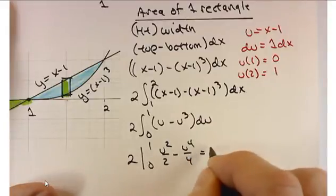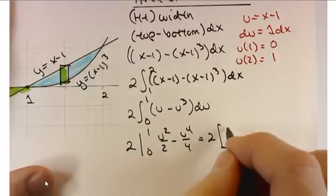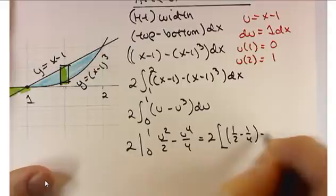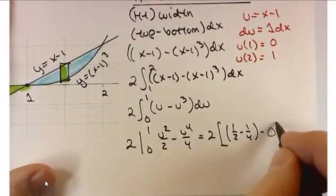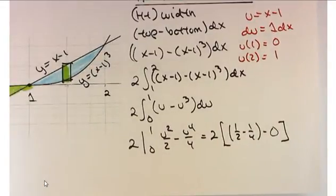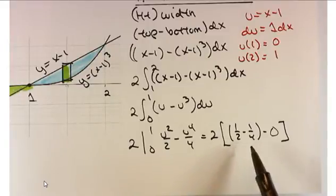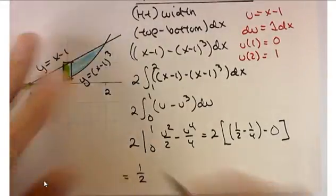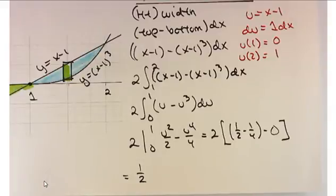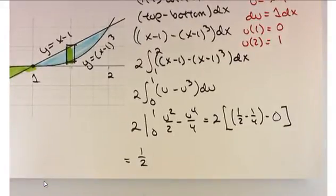So it's going to be twice the antiderivative u squared over 2 minus u to the 4th over 4, evaluated from 0 to 1. That gives twice of (1/2 minus 1/4), minus 0. Inside the parentheses the difference is 1/4. One quarter times 2 gives 1/2.